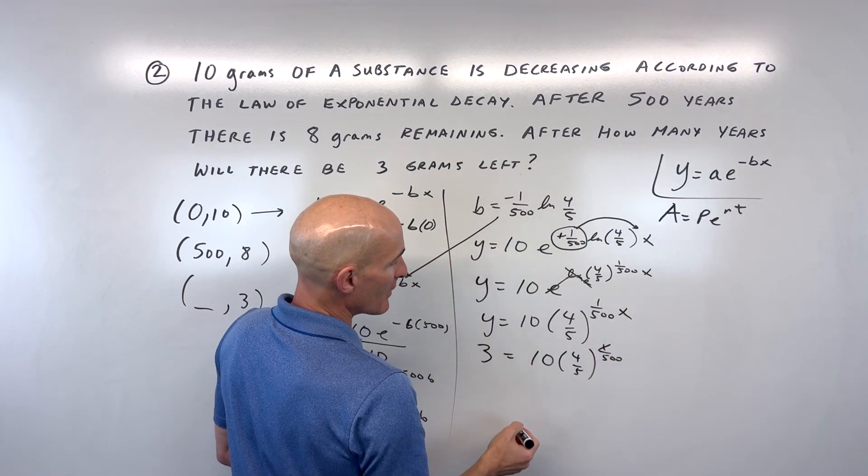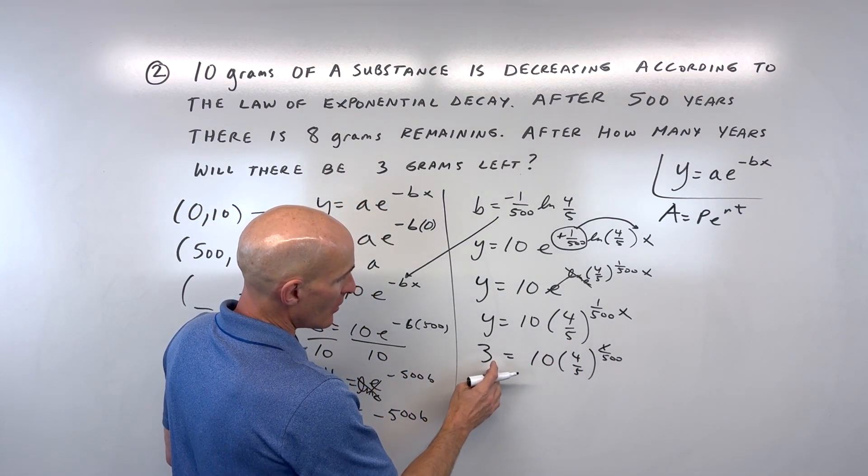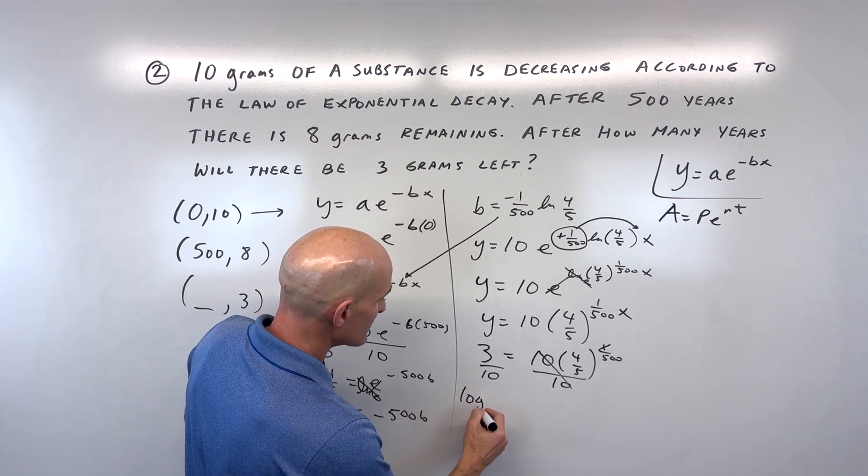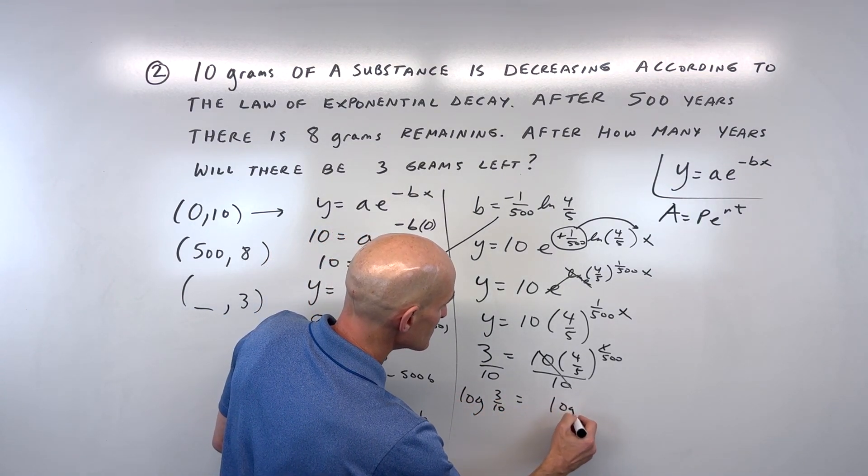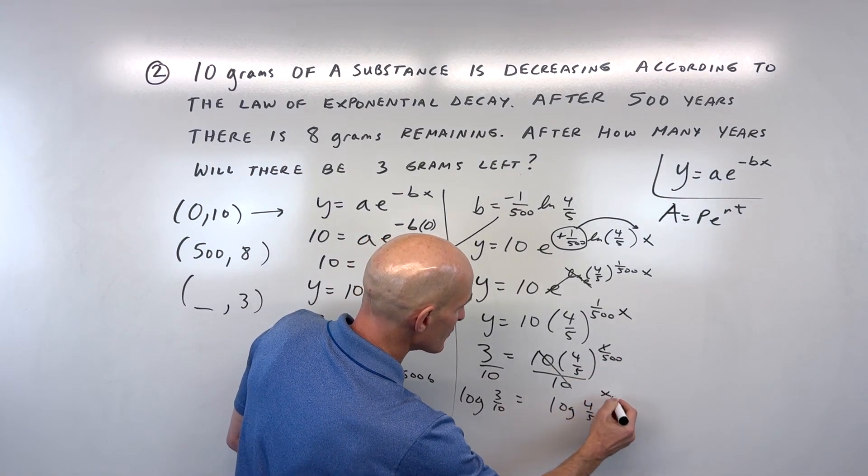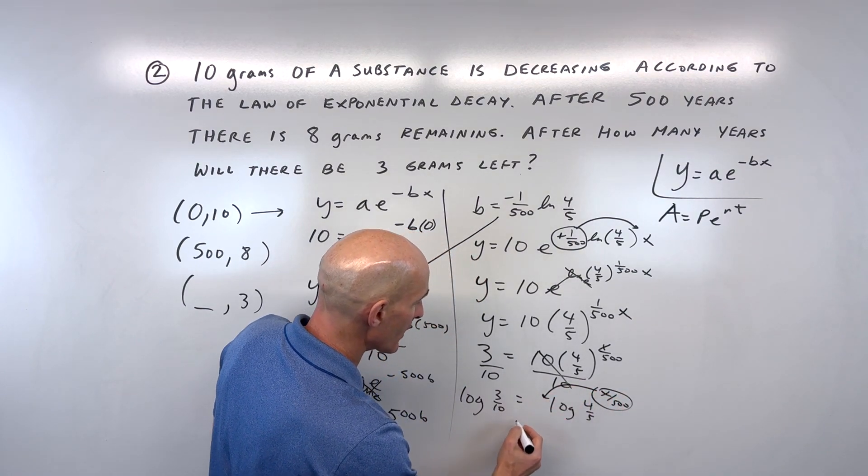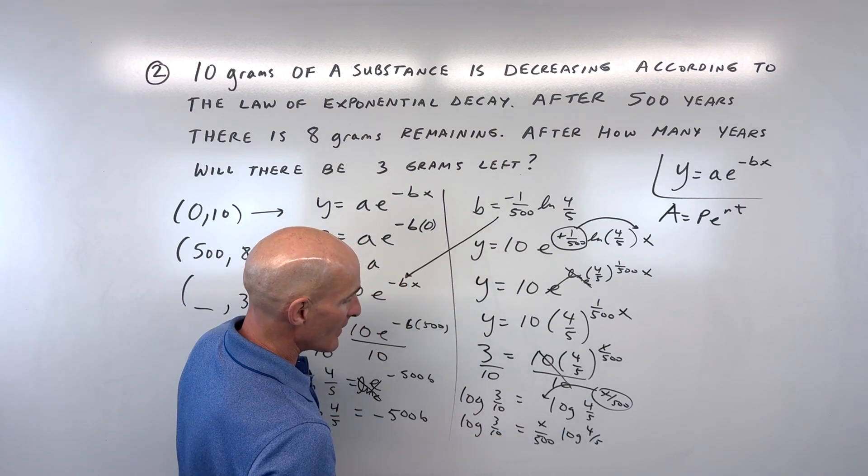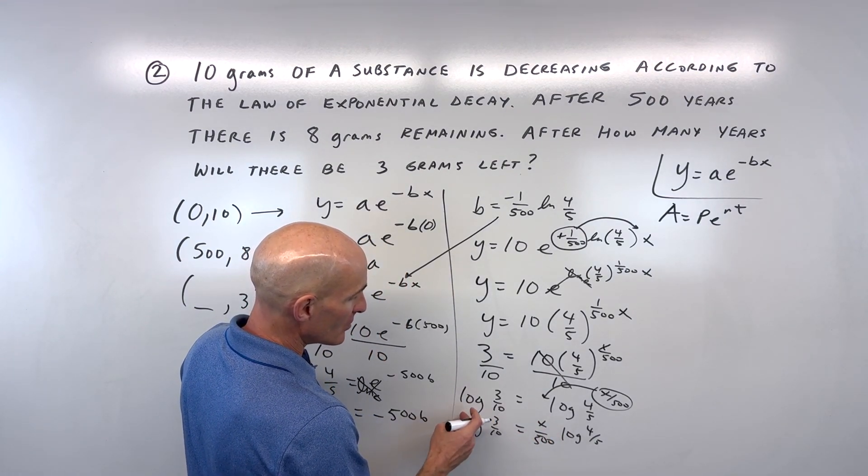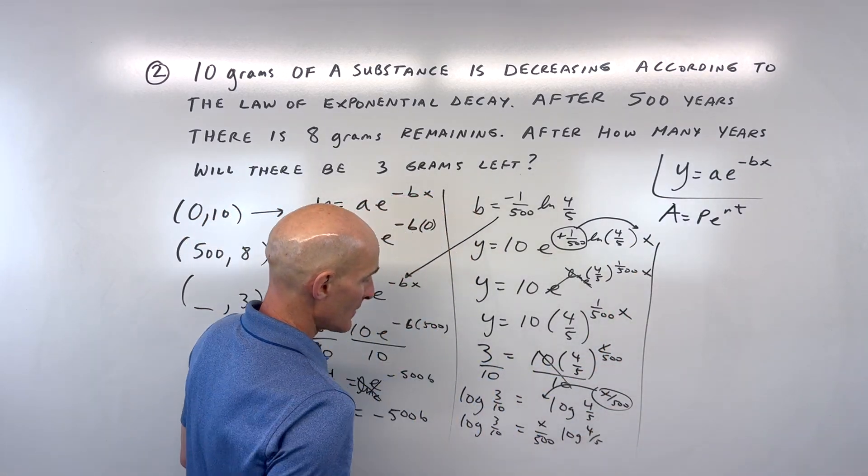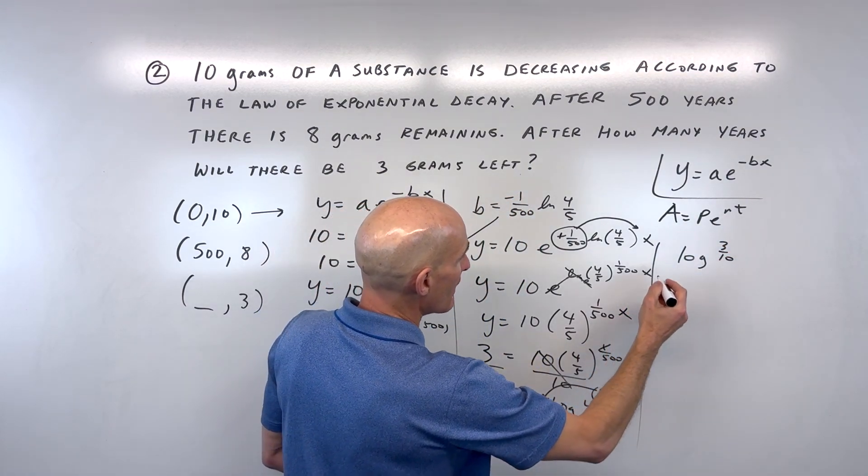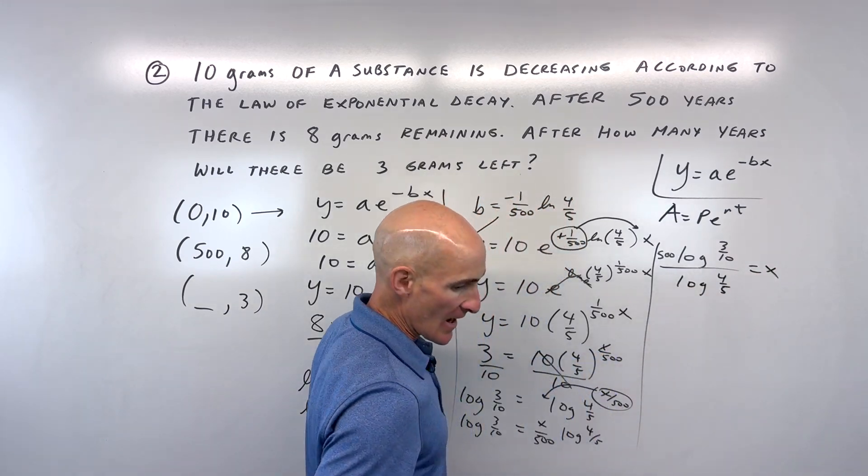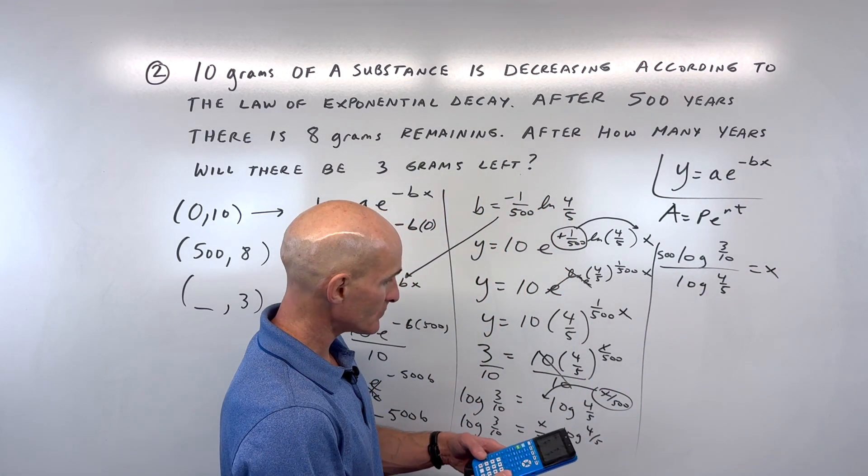We can write this as x divided by 500. Let's solve for x. Divide both sides by 10 - that's 3 tenths. Take the log of both sides: log of 3 tenths equals log of 4 fifths to the x divided by 500. Using the power property, bring down x over 500 in front of the log. Multiply both sides by 500 and divide by log of 4 fifths. So x equals 500 log of 3 tenths divided by log of 4 fifths.